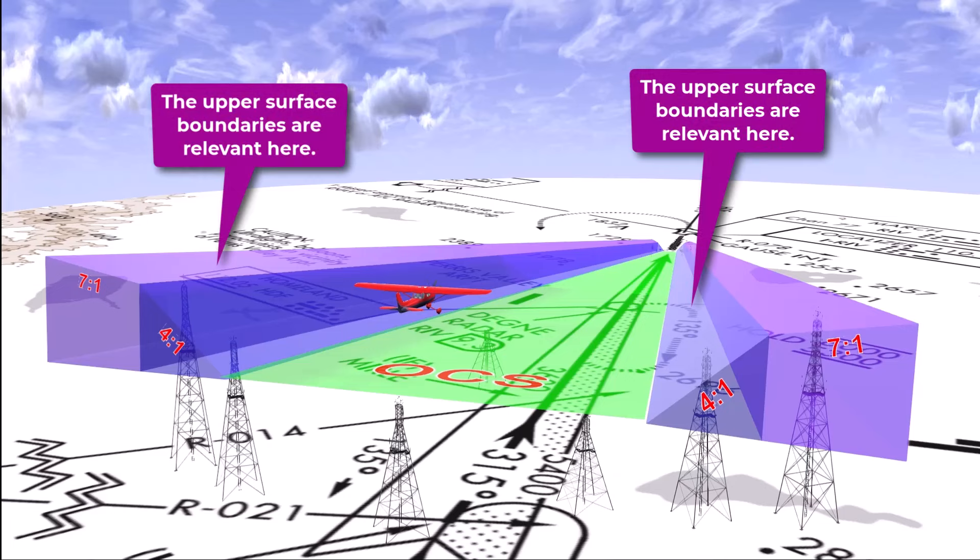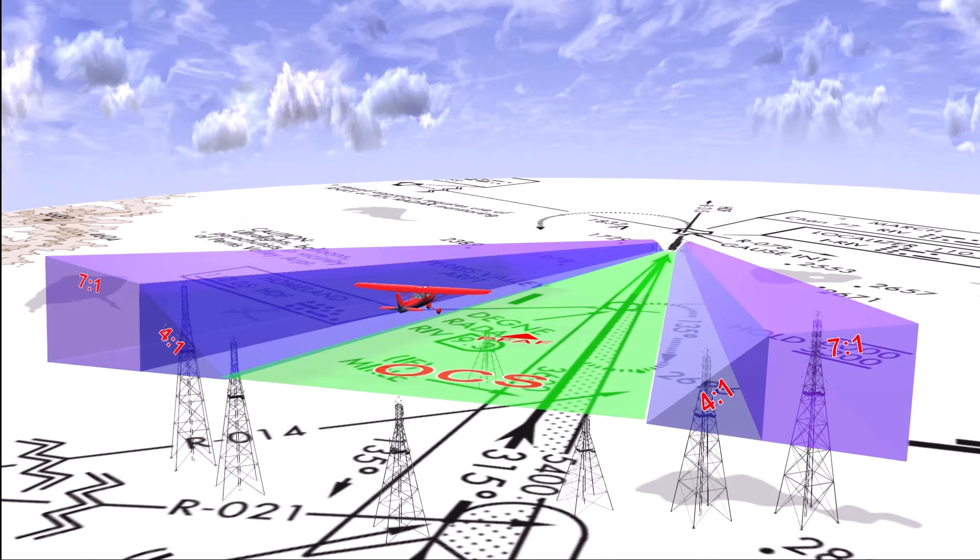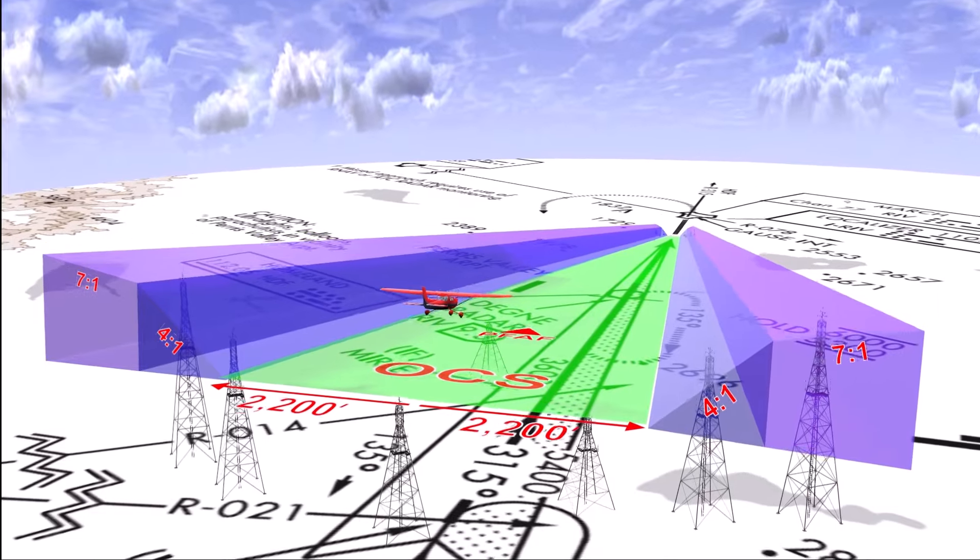At a distance of approximately 8 miles from the runway threshold, the 4 to 1 blue sloped surface can be found at 2,200 feet to either side of the course centerline.